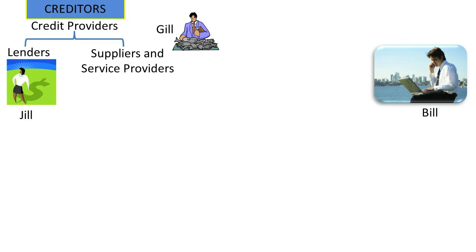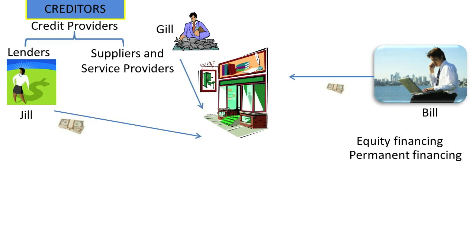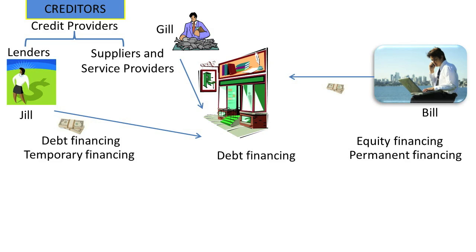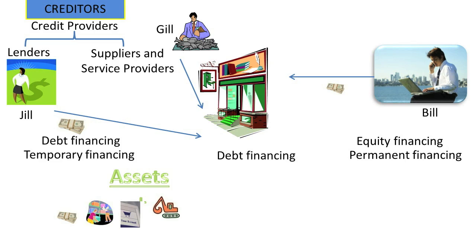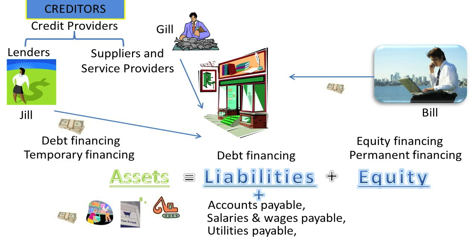When owners such as Bill provide resources to a business, such financing is called equity financing and is considered permanent financing. On the other hand, when creditors provide financing to businesses, such financing is called debt financing and is considered temporary financing. Debt financing causes two things to happen in a borrower's accounts. First, the borrower's resources, known as assets, will increase — some common assets are cash, inventory, accounts receivable, and equipment. Second, the creditor's claims against the borrower, known as liabilities, will increase — some common liabilities are accounts payable, salaries and wages payable, utilities payable, and notes payable.